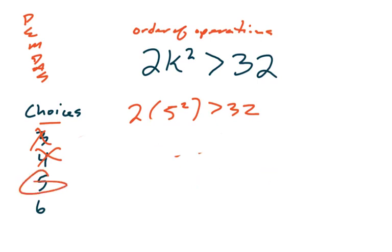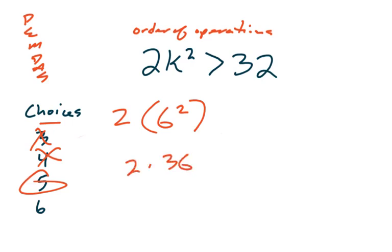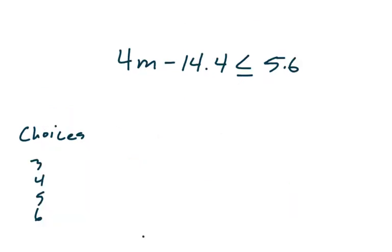Let's try 6 just to make sure. If we look at 6 over here, we would have 6 squared. We want to multiply that by 2. 2 times 6 squared. Well, let's see. That's 36. So 2 times 36 is 72, and 72 is definitely greater than 32. So 6 does work as a possible solution. So those would be our choices.